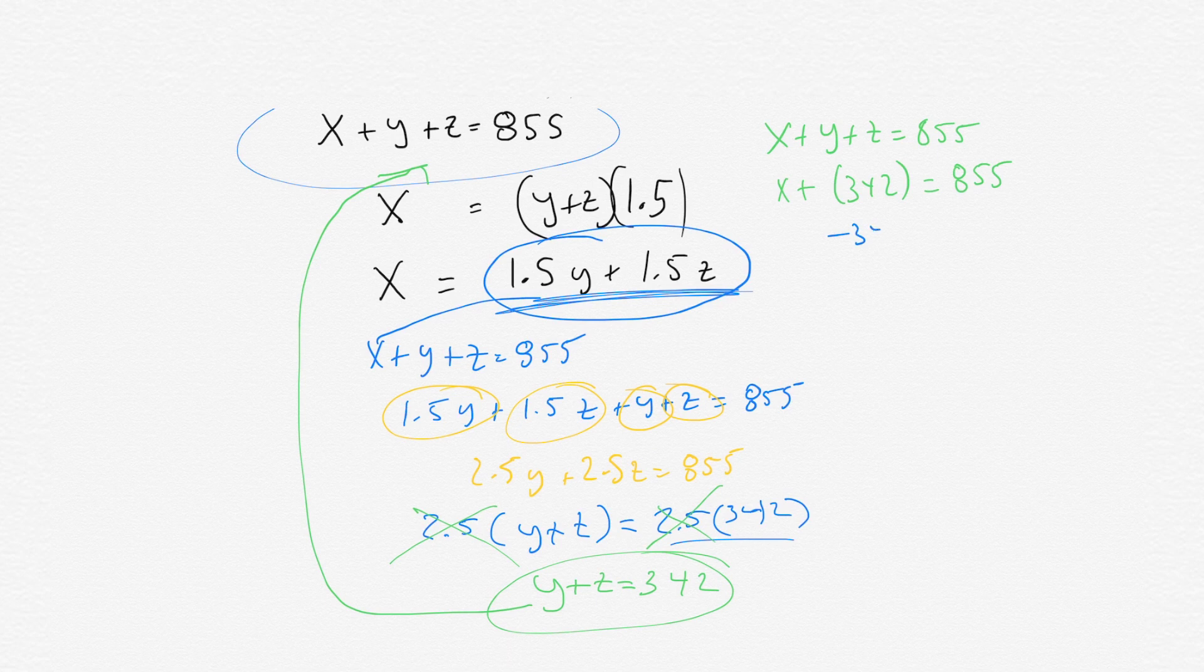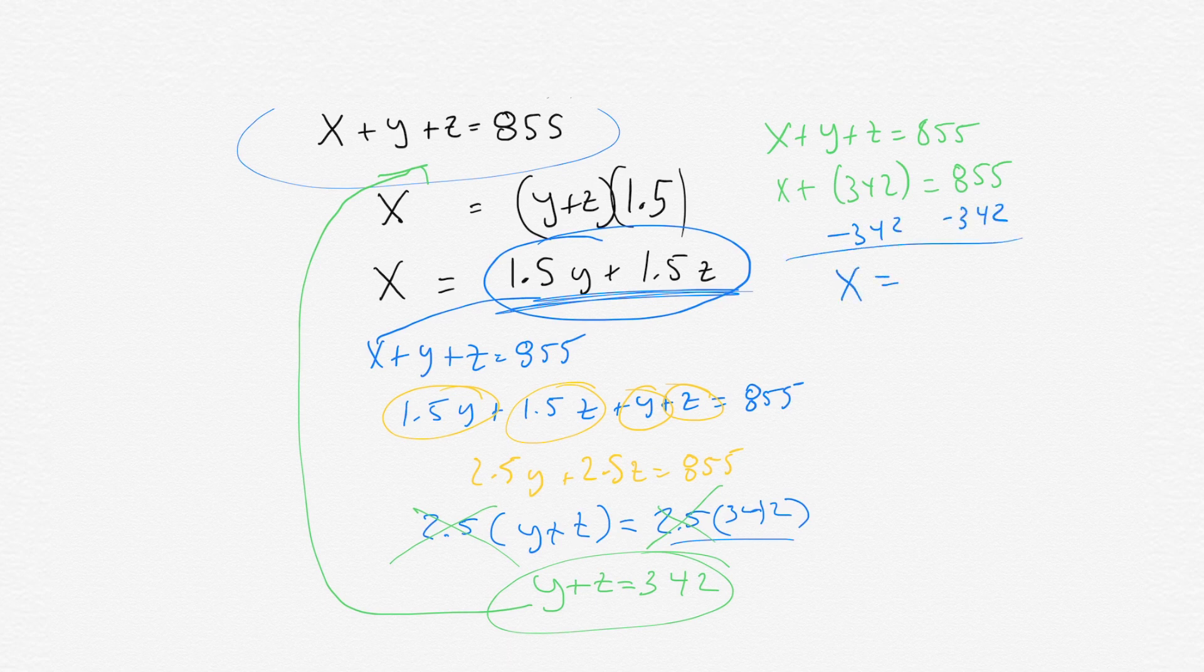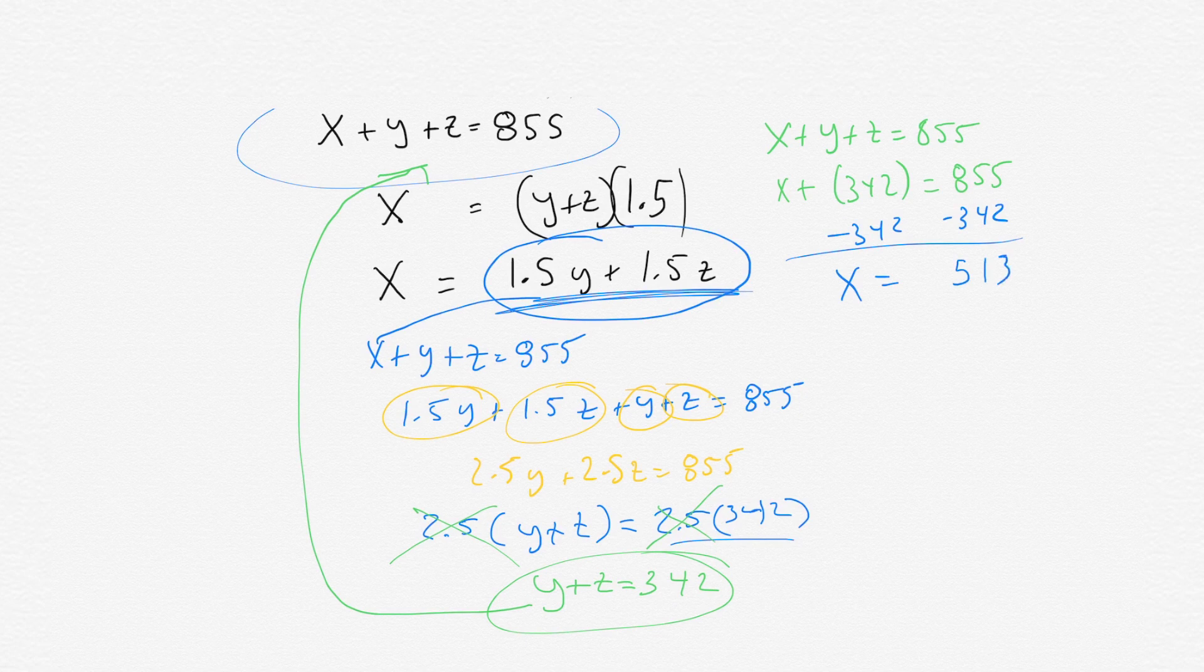And then at that point, you could subtract 342 from each side. So you get X equals 513. That's the answer.